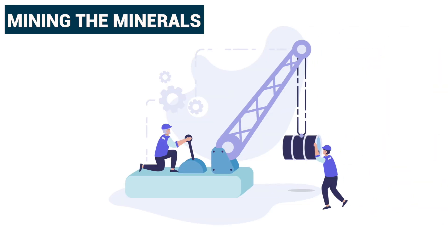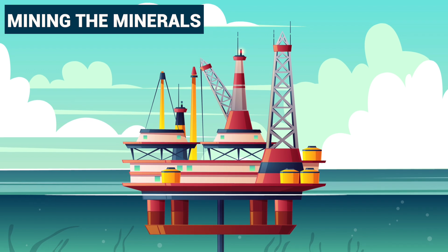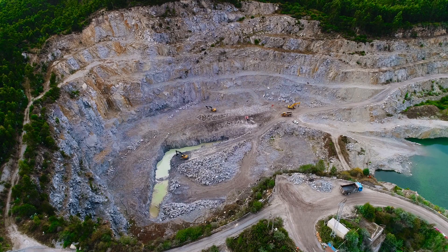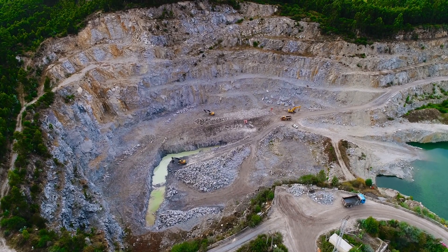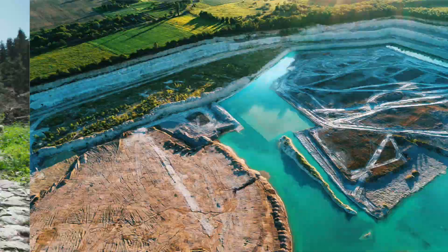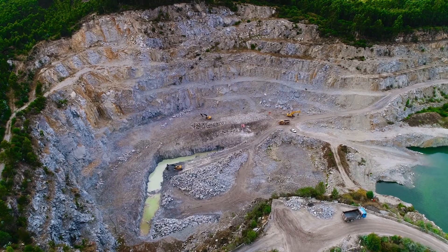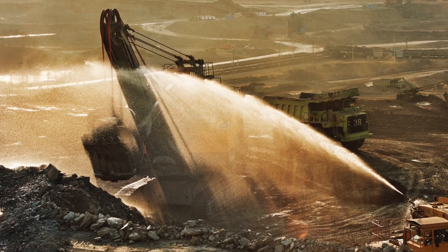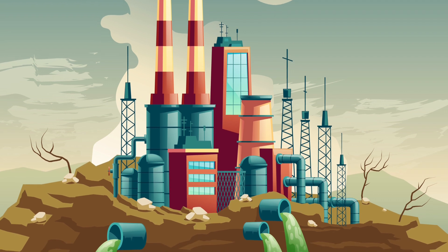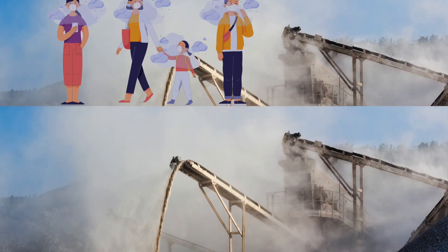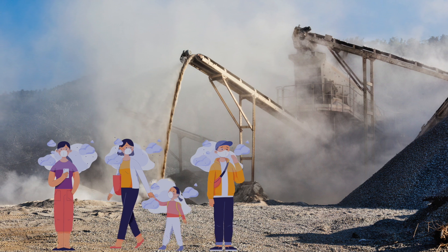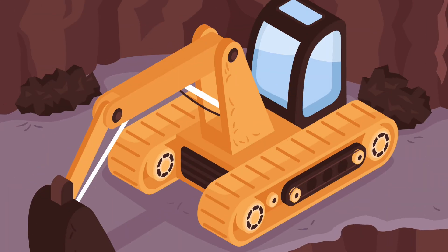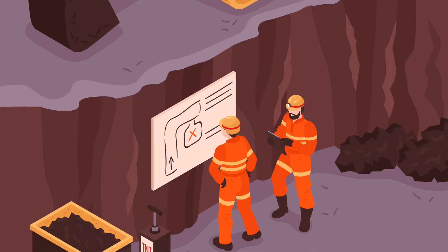Drilling very deep tube wells to get crude oil or natural gas is done near the seacoast. Example: Bombay High near Mumbai. Mining results in disturbing the surface area such as cutting down forests, destroying fields and habitations, and creating large pits or mounds. Mines need large amounts of water to wash the minerals, which results in polluting nearby rivers and water resources.